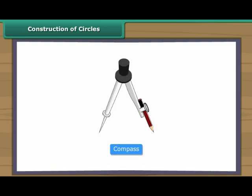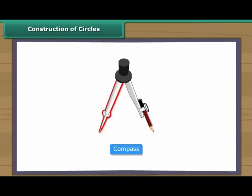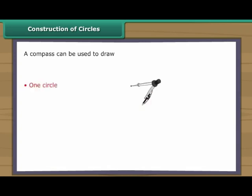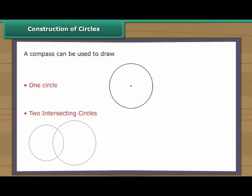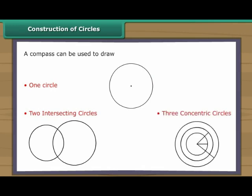A compass is an instrument with two arms. While one arm remains fixed, the other arm with the pencil moves freely. Let us use a compass to draw one circle, two intersecting circles, and three concentric circles.